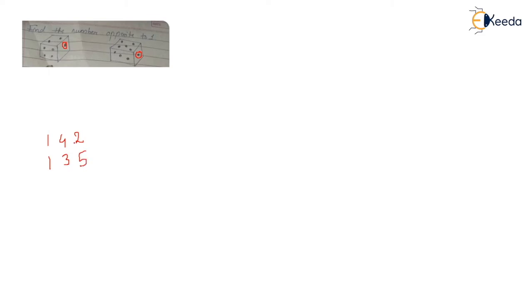Let's see the question based on dices: find the number opposite to one. Here you can see the number one is common between them. As I told you, you can move either clockwise or anti-clockwise. Moving clockwise: one, four, two — and one, three, five. So four is opposite of three, two is opposite of five. What will be opposite of one? It will be six. Within five seconds you can find the answer — this is the magic if you know the tricks.